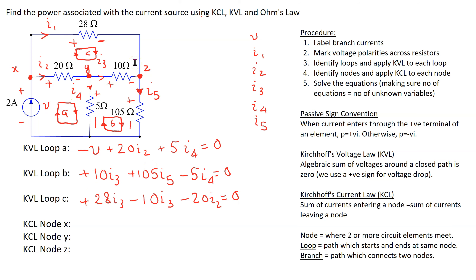Next, we apply Kirchhoff's Current Law to nodes X, Y, and Z. KCL states that the sum of currents entering a node equals the sum of currents leaving a node. At node X: 2 amps is entering and I1 and I2 are leaving, giving 2 = I1 + I2. At node Y: I2 is entering, I3 and I4 are leaving, giving I2 = I3 + I4. At node Z: I1 and I3 are entering and only I5 is leaving, giving I5 = I1 + I3.